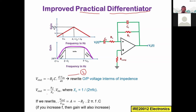Now I write the output value in terms of impedance. The equation becomes v_out = -(R_f / X_c) * v_in, where X_c is the reactance of the capacitor. The formula for X_c is: X_c = 1 / (2πfC), where C is the capacitor value and f is the frequency value.